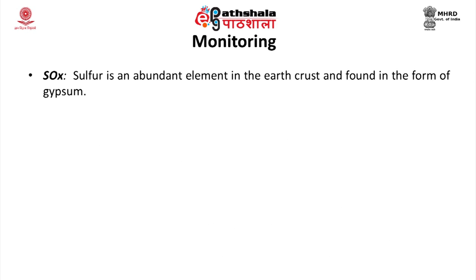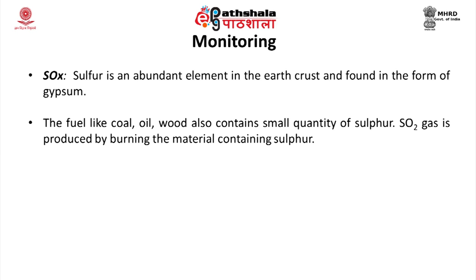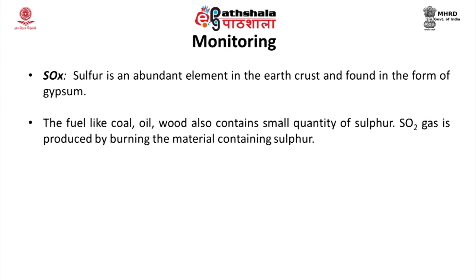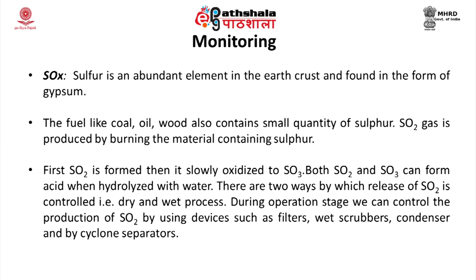Sulphur is an abundant element present in the earth's crust, found in the form of gypsum. Fuels like coal, oil, and wood also contain small quantities of sulphur. SO2 gas is produced by burning material containing sulfur. SO2 is first formed, then it is slowly oxidized to SO3. Both SO2 and SO3 can form an acid when hydrolyzed with water.